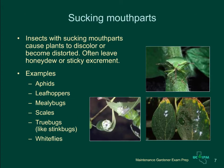Sucking insects, like the stink bug pictured here, have tubular mouth parts that they insert into the plant to suck up sap. Insects with these types of mouth parts cause leaves to curl or discolor. They often leave honeydew or sticky black excrement spots. They do not chew holes in leaves or other plant parts. Insects with sucking mouth parts include aphids, leafhoppers, mealybugs, scales, true bugs such as stink bugs, and whiteflies.